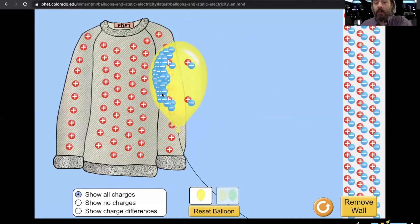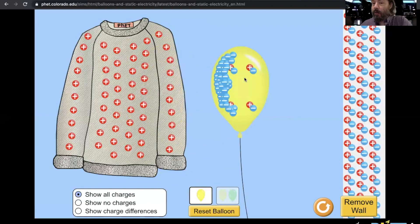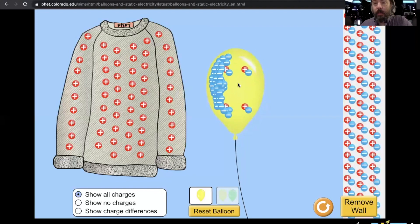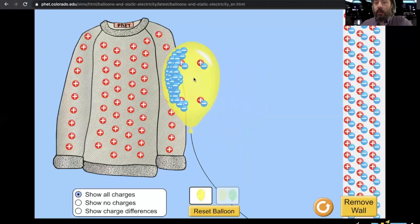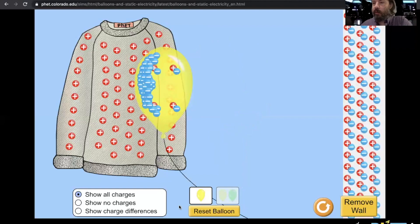So now the sweater is positively charged because we've taken away the electrons and the protons remain, so it's positively charged. The balloon has gained those extra electrons, just on its surface. And now positives and negative opposites attract, so I can let go of the balloon, and it will stick to the sweater.